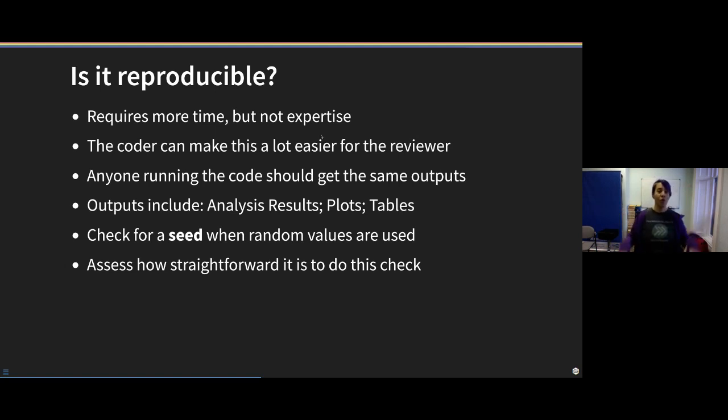So the coder can make this whole thing easier for the reviewer by making it really clear what are the analysis results and the plots and the tables in their code and in the manuscript or any other materials. You can also let the coder know if you're doing this kind of check how straightforward is it to do the check. So if you're doing this as pre-submission, how much effort did you need to go through to match every number in the manuscript to a value in the code?